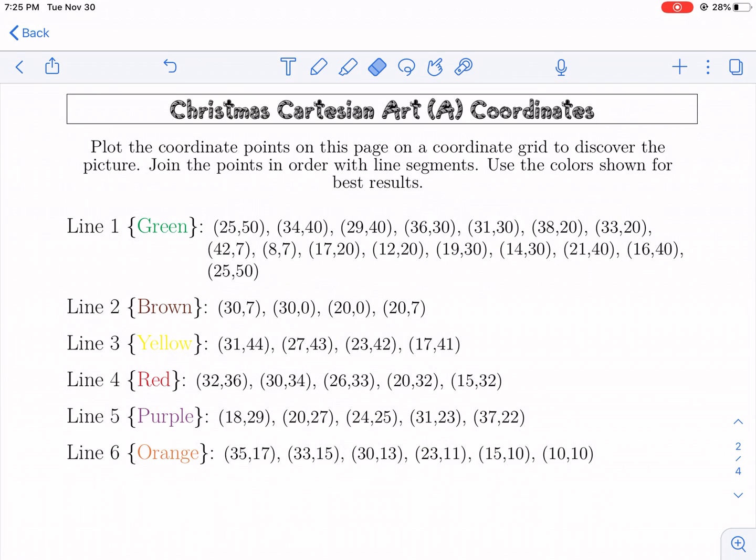The main premise of this is we're going to be plotting points on the XY coordinate plane. We're going to take six different little lines here that we're going to connect, and then it's going to form a picture. It's going to be something festive because this one, unlike our turkey we did for Thanksgiving, has colors. So this is going to be kind of cool.